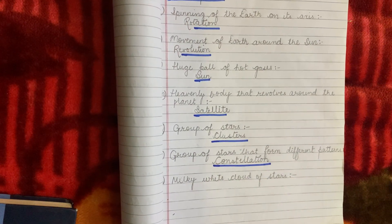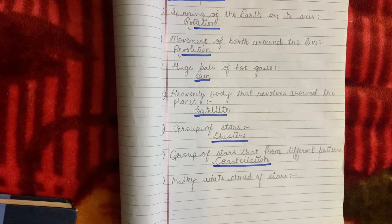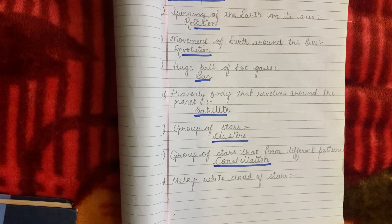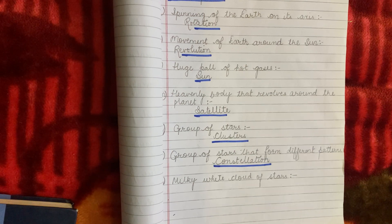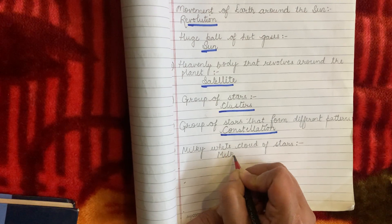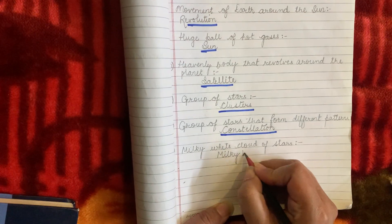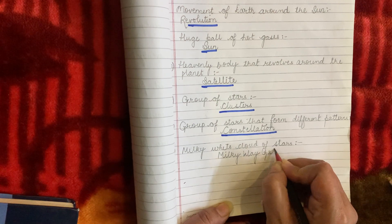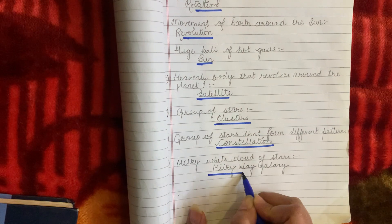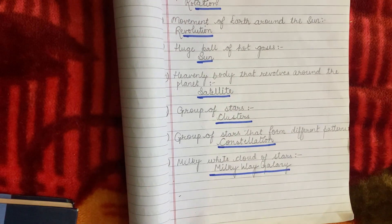Milky white cloud of stars — when through a telescope we look at the sky we see a cloud of stars that is milky white. This is our galaxy. Because our galaxy appears milky white, the name of our galaxy is Milky Way Galaxy. So the milky white cloud of stars is known as Milky Way Galaxy.